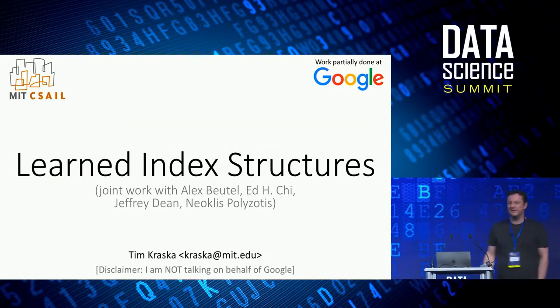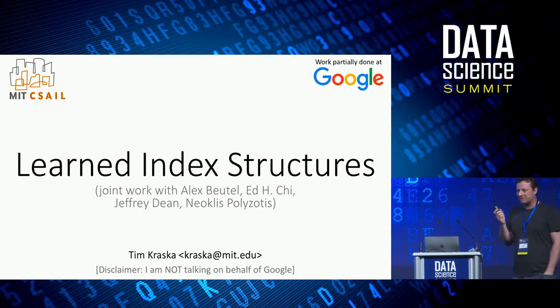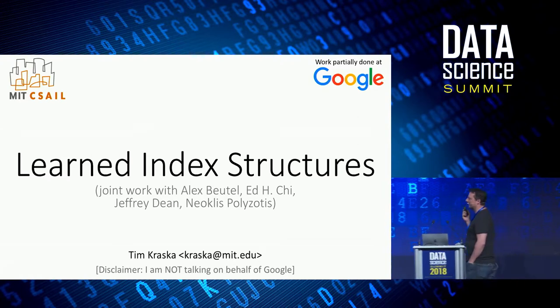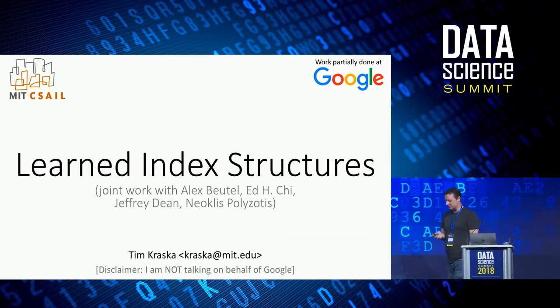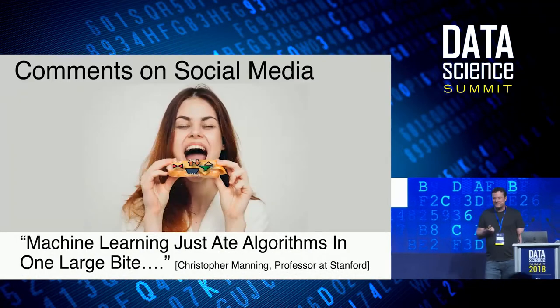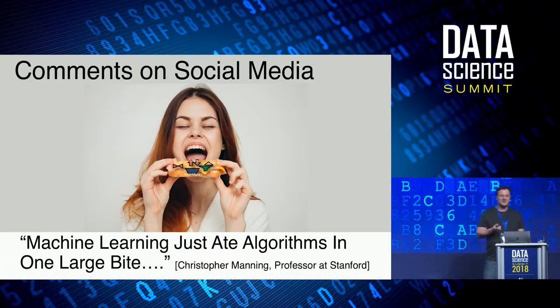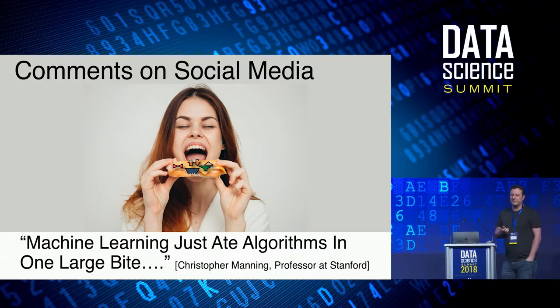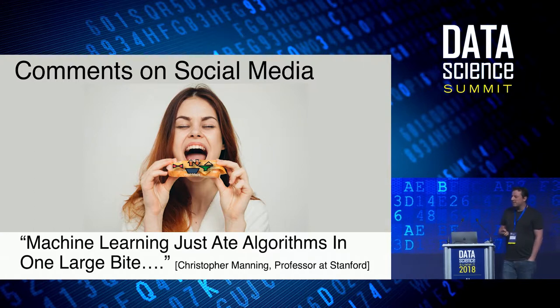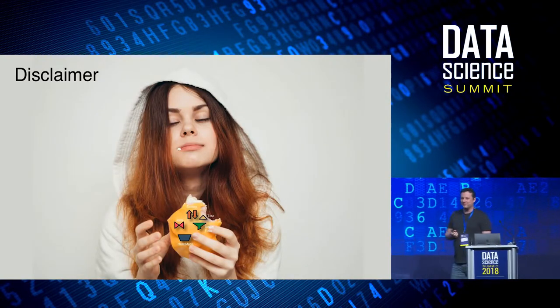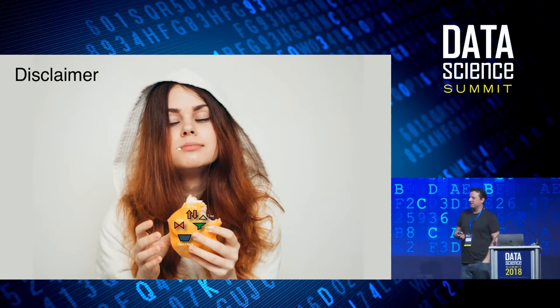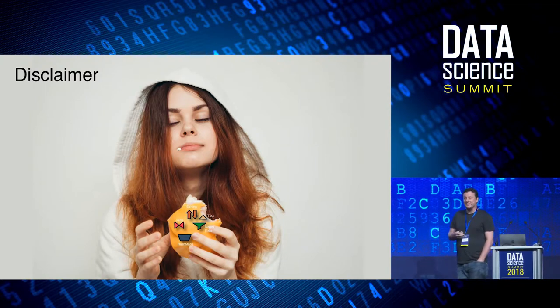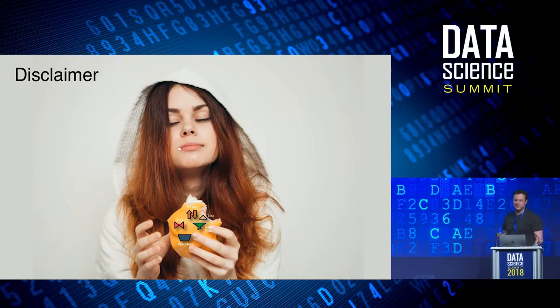It's really my pleasure to be here. What I'm going to talk about is some work we did last year on my sabbatical at Google about how you can actually learn index structures. You might have seen this work because at some point it went viral after a tweet by Christopher Manning, a professor at Stanford, saying that machine learning just ate algorithms in one large bite. As a disclaimer, I by no means mean that machine learning is eating or will ever eat entirely the field of data structures and algorithms, but maybe it just took one delicious bite from it. There's a lot of research left open and a lot more to be explored.